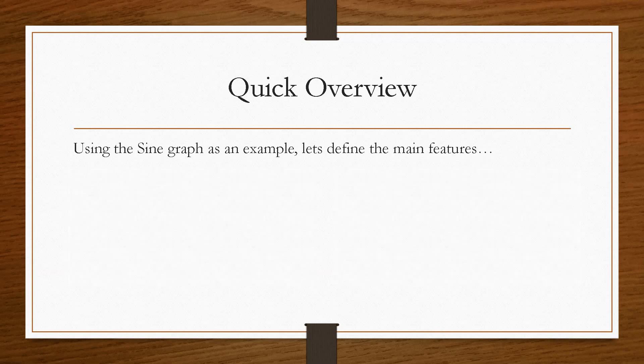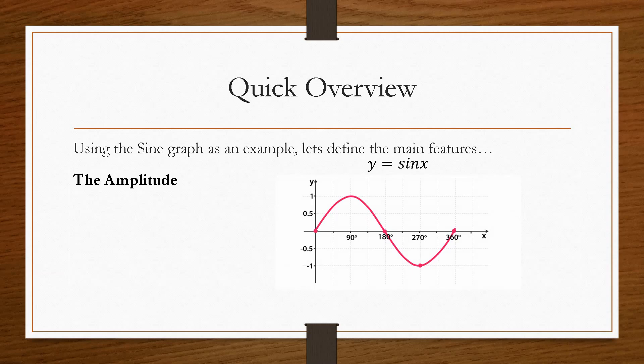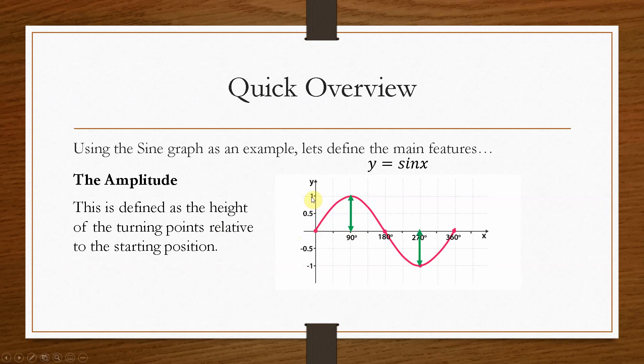Now we'll use the sine graph as an example, and we'll define the main features of the graph. So just as before, this is y equals sine x. Now the first thing that we need to know is something called the amplitude. Now the amplitude is defined as the height of the turning point relative to its starting position. So the amplitude is basically the distance from the starting point, which here is 0, and the maximum and minimum turning points, which will be 1 and minus 1. So the amplitude is basically how stretched can it be. And it can either be stretched or it can be compressed. And when we solve this, a value at the beginning of either the sine or the cos equation, a value here indicates that it is going to either stretch or compress the amplitude. So that's going to have an effect on the turning point.